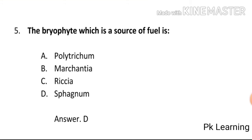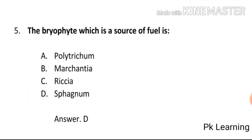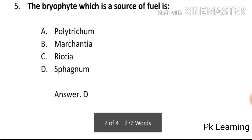The bryophyte which is a source of fuel is: A) Polytrichum, B) Marchantia, C) Atricia, D) Sphagnum. The answer is D, Sphagnum. Sphagnum is a source of fuel. D is the correct option.